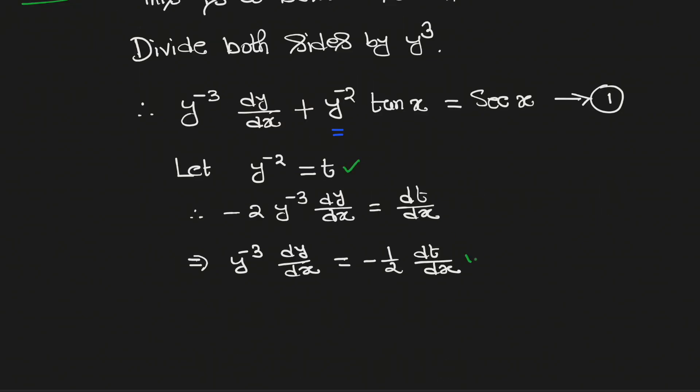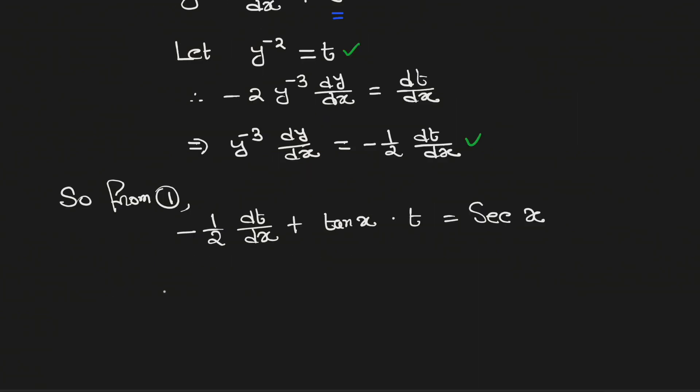Now we will put these values in equation number 1. So from equation 1 we obtain that minus half dt/dx plus tan x times t equals sec x. Now multiply both sides by negative 2 we get that dt/dx minus 2 tan x t equals minus 2 sec x.